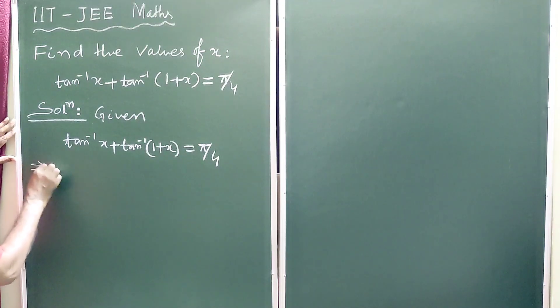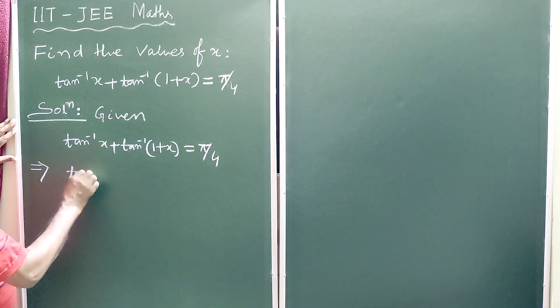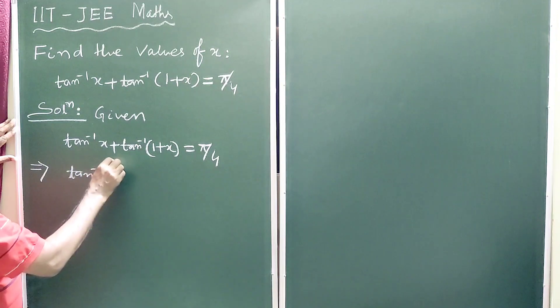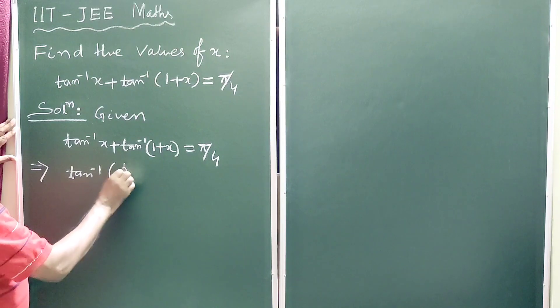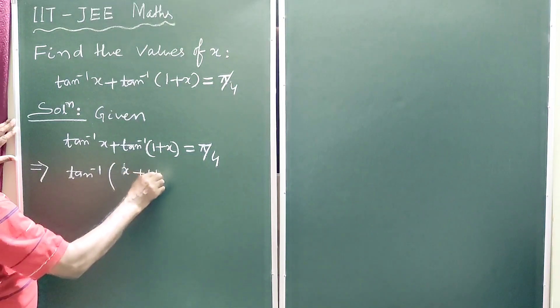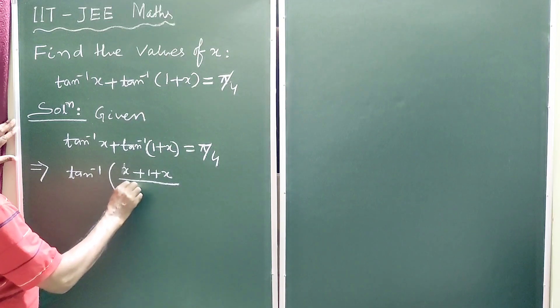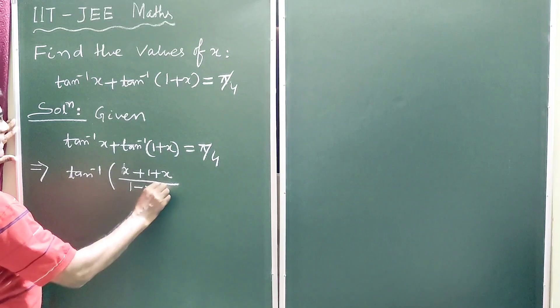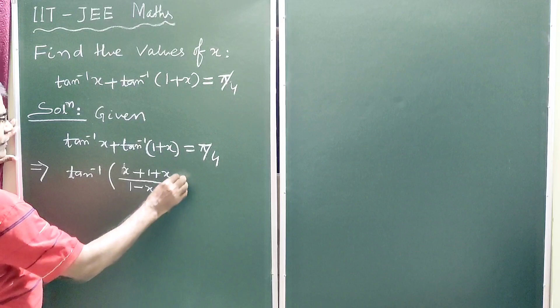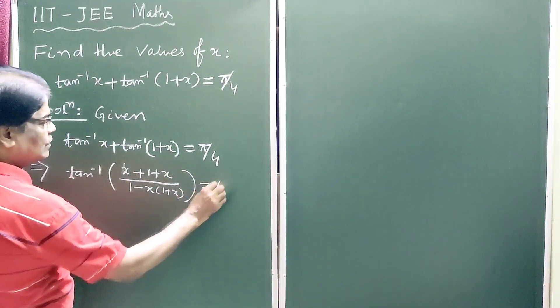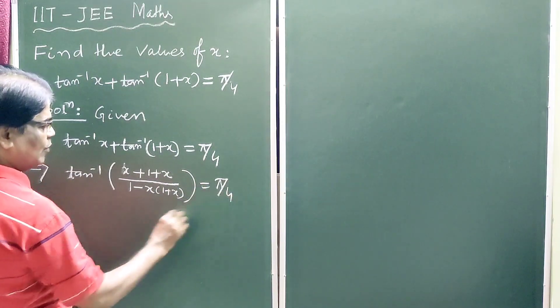We can write this implies tan inverse of x plus 1 plus x divided by 1 minus x into 1 plus x is equal to pi by 4.